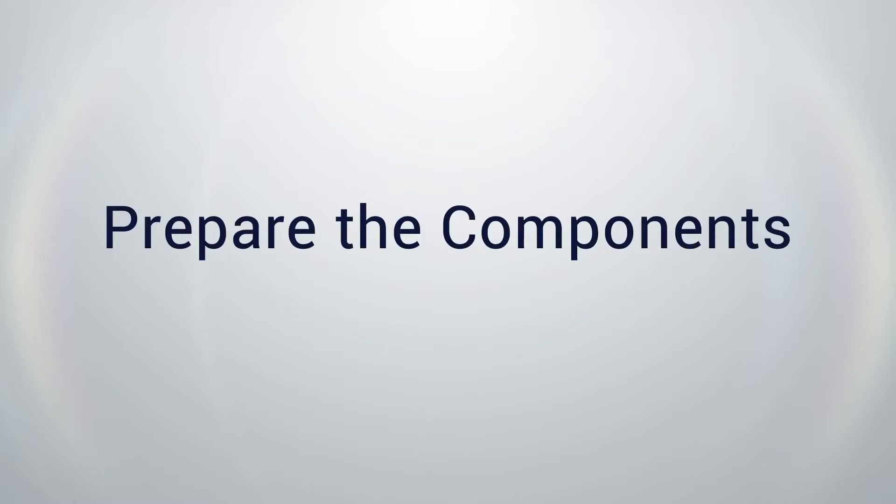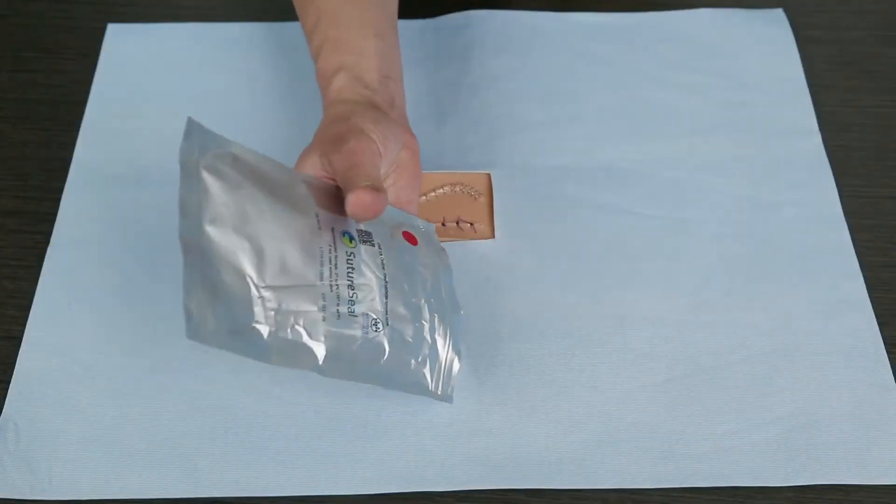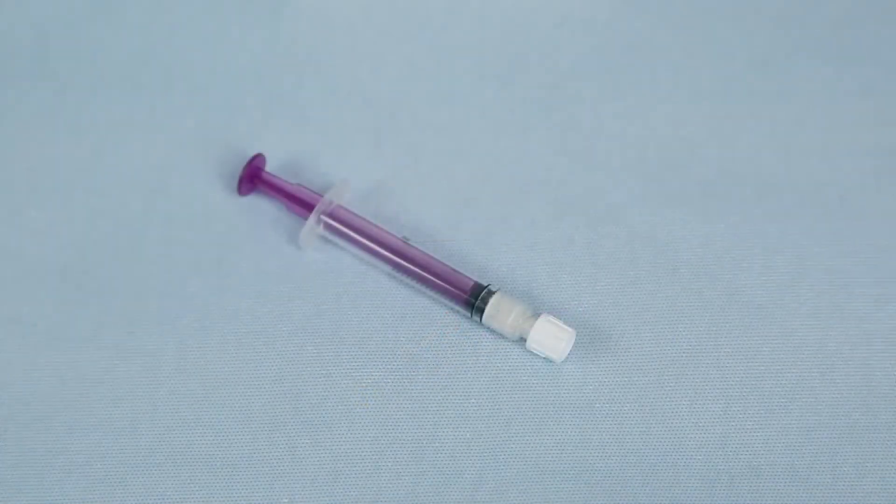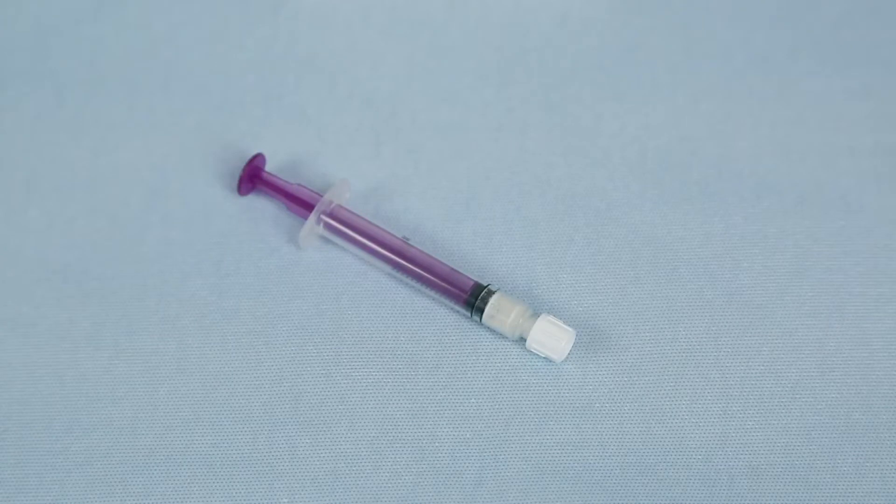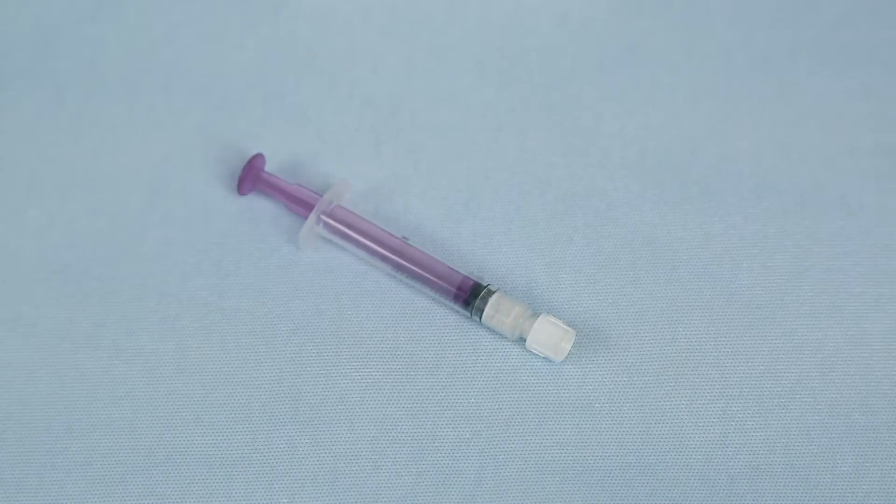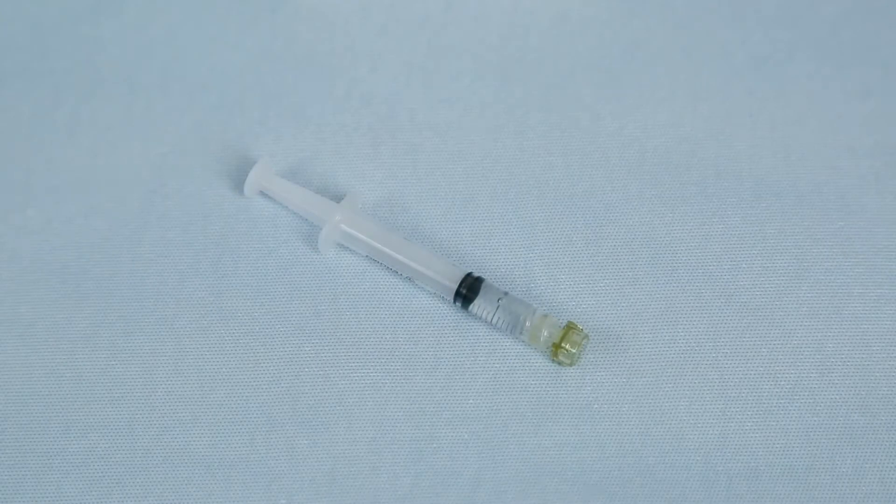The first step is to prepare the components. Open the foil pouch and remove the three components: two syringes and a tube case containing the application brush. One syringe is a 2.5 milliliter syringe containing 50 milligrams solid white powder hydrogel polymer, and the other is a 3 milliliter syringe containing liquid phosphate buffer solution.